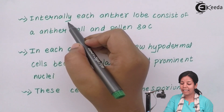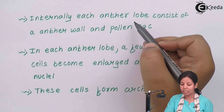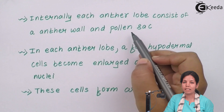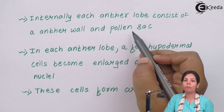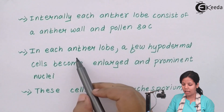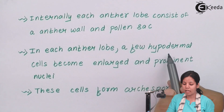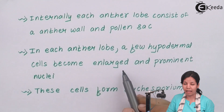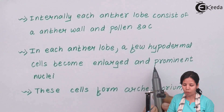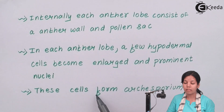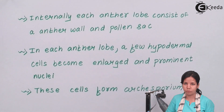Internally, each anther lobe consists of an anther wall and a pollen sac, and this pollen sac will have pollen grains. Each anther lobe has a few hypodermal cells, and these cells have become enlarged and are prominent. These cells form the archaeosporange.